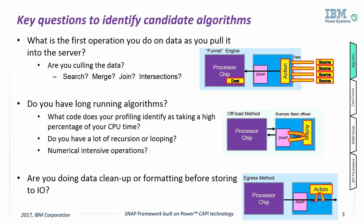The last diagram shows the egress case, where data is flowing out of the server to storage or network devices. If there is data manipulation required, such as encryption, formatting, or compression, the FPGA can perform the function and then send the data directly to the destination.